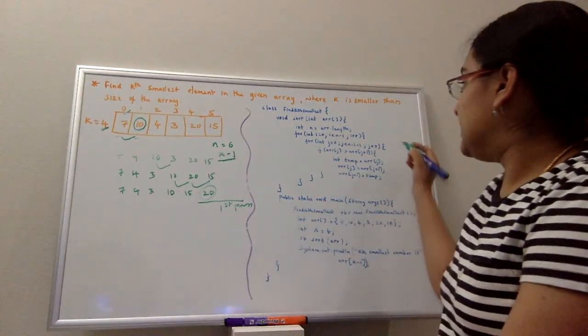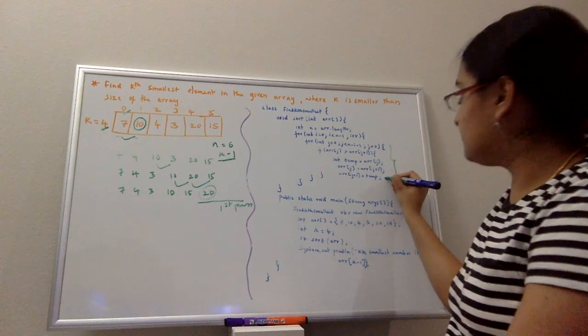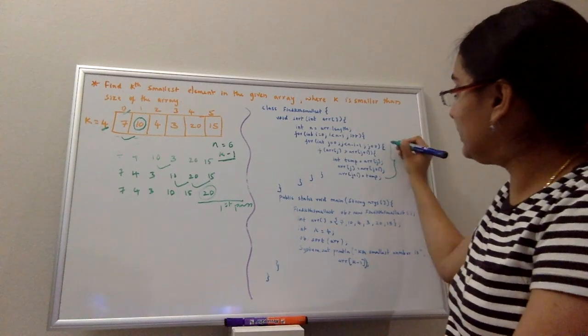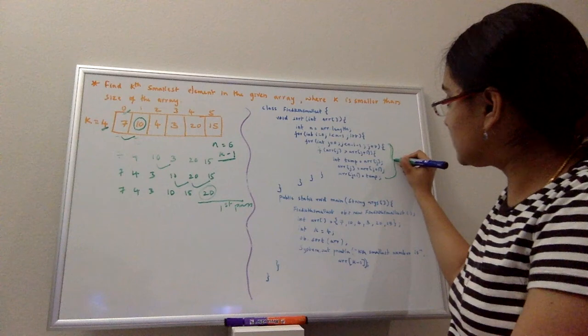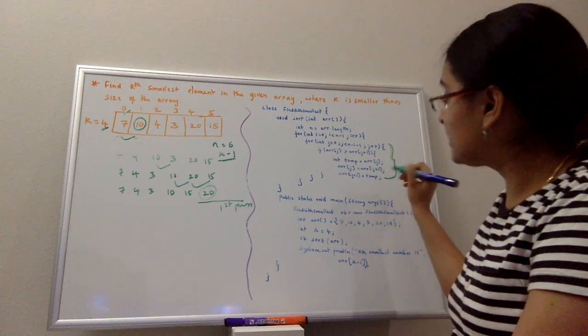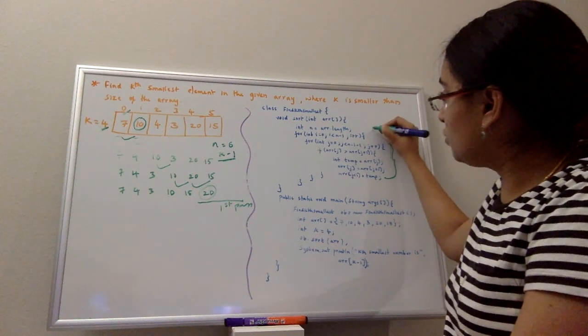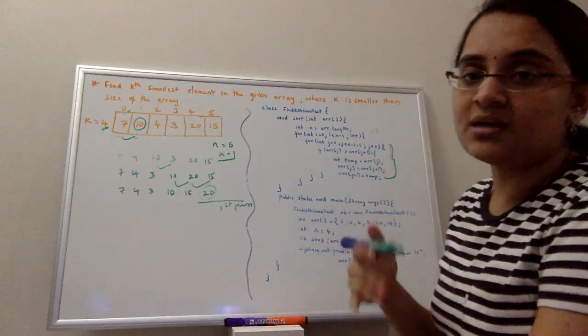So basically this loop will give me the largest element by the end of that pass. The outer loop will tell me how many number of passes do I need to do.